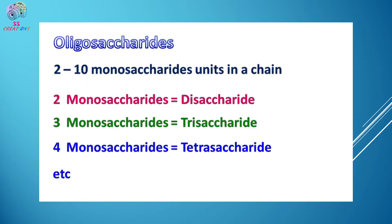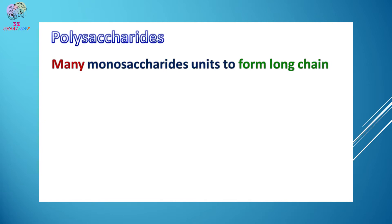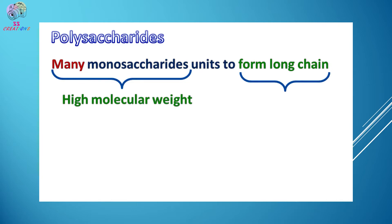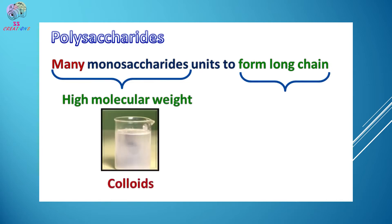Oligosaccharides are called compound sugars, which are made up of two to ten molecules of either the same or different monosaccharide units. Accordingly, they are designated as disaccharides (two monosaccharide units), trisaccharides (three units), tetrasaccharides (four units), and so on. Polysaccharides are complex sugars made up of more than ten molecules of monosaccharides. They have high molecular weight and often form colloids when dissolved in water, and can be easily branched or unbranched. So we have classified carbohydrates as monosaccharides, oligosaccharides, and polysaccharides.